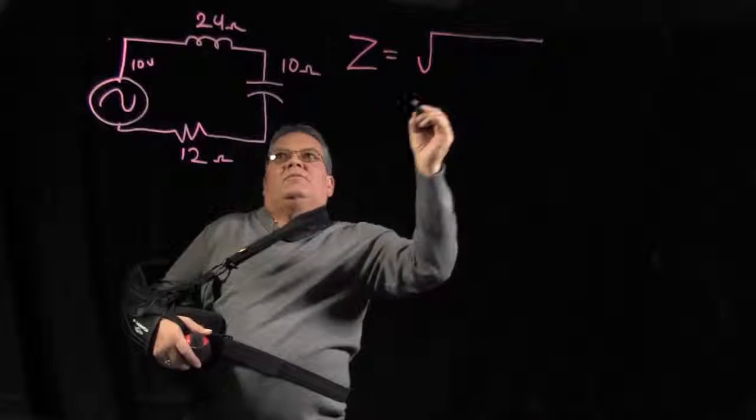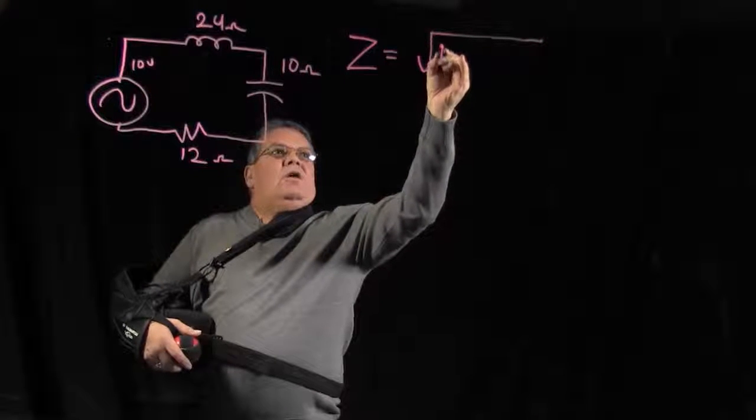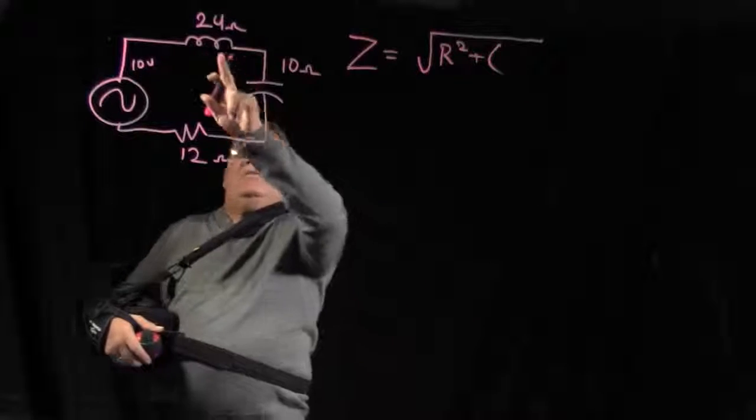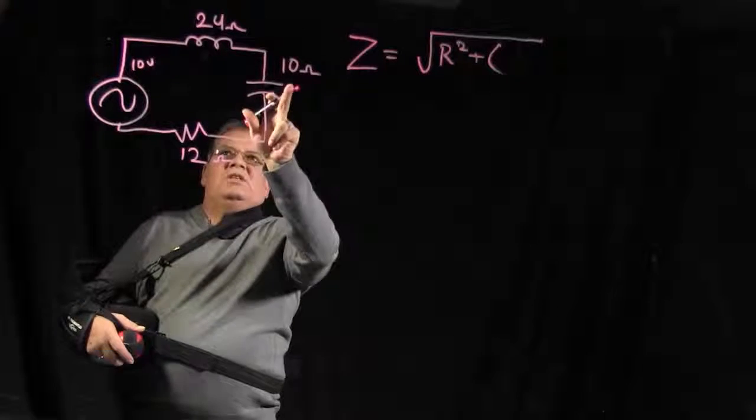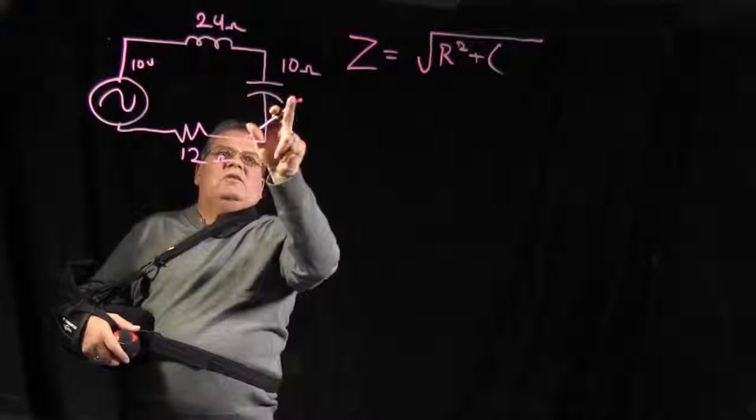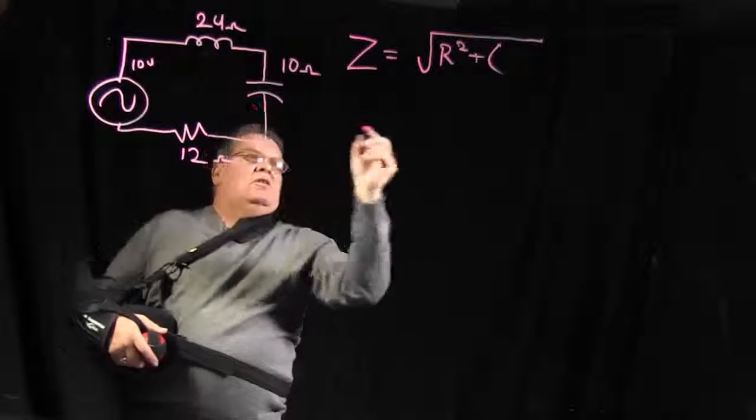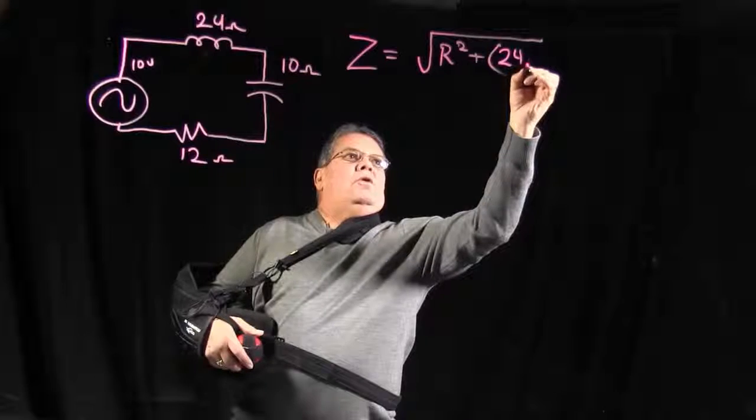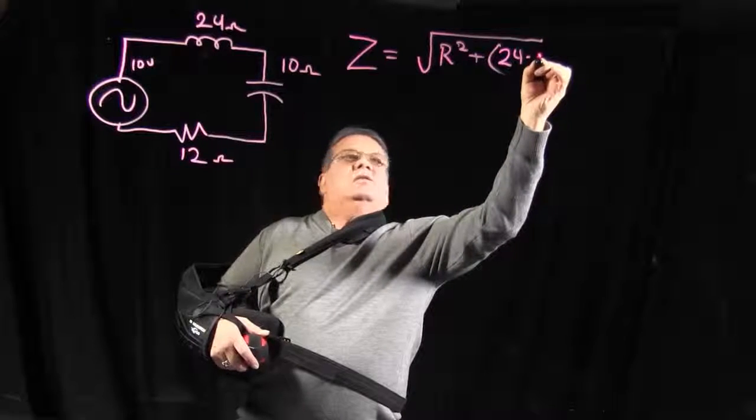So our formula for impedance is R squared plus, now when you have, you have to pay attention which one of these is higher, the inductor or the capacitor. The one that is higher, you will be subtracting the lesser number from that. So we have 24 minus 10.